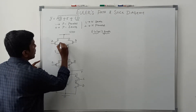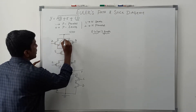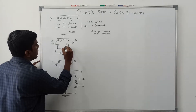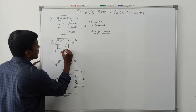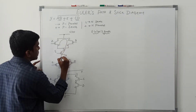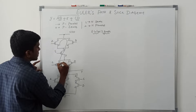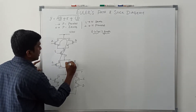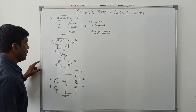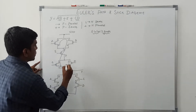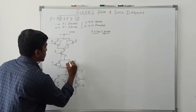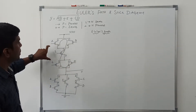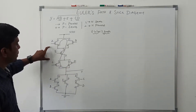I take transistor A as the starting point. So the Euler path is A, B, E, C, and D. This is the Euler path for the pull-up network.